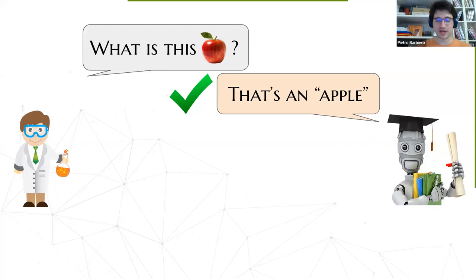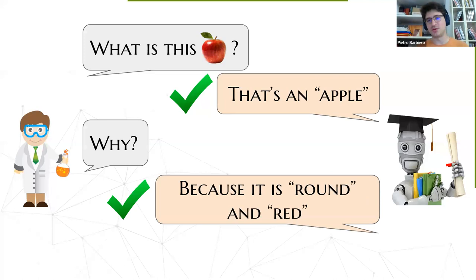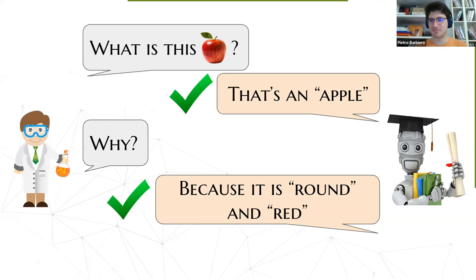The second kind of question we may want to ask machines is: why do you think this is an apple? What are the main features, what is the reasoning behind your prediction? We expect the machine to say something like 'this is an apple because it's round and red' — two features common to most apples. If we get a reasonable answer like this, we might be happy. We are giving a very high level overview of what kind of answer we may look for.